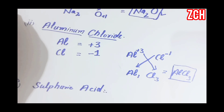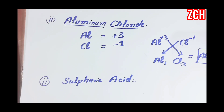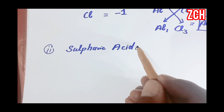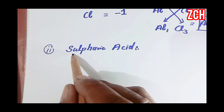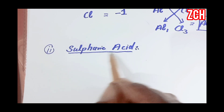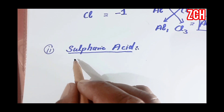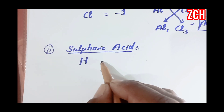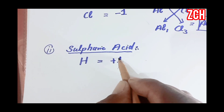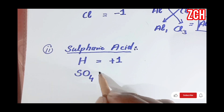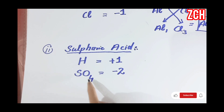Next we will find the chemical formula of sulfuric acid, the king of chemicals. In the formula of sulfuric acid, one is the hydrogen atom having valency plus one, and the other is the sulphate ion having valency minus two.